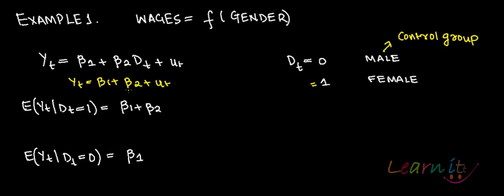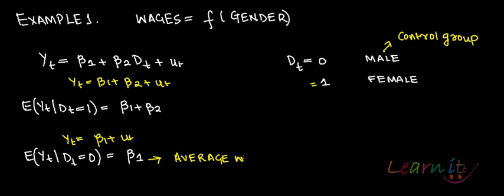Now if you take the expectation of this: beta 1 and beta 2 come out of the expectation sign, and E of ut is zero. Hence, E(Yt) when dt equals to 1 is beta 1 plus beta 2. Similarly, when dt equals to zero, the model is beta 1 plus ut. Taking the expectation, E(ut) is zero, so E(Yt) is beta 1. The interpretation of beta 1 hat would be the average wages of the control group.